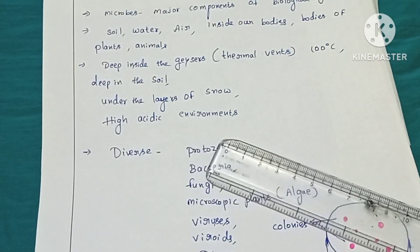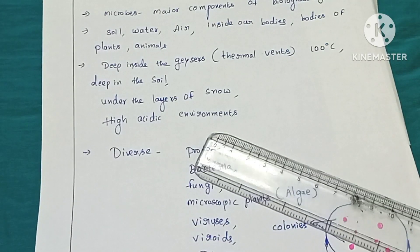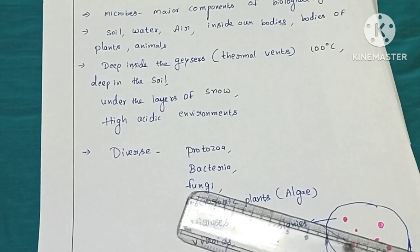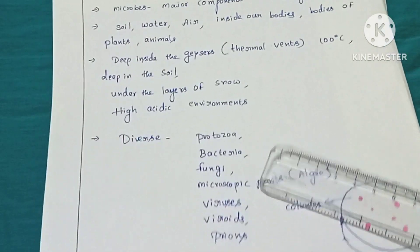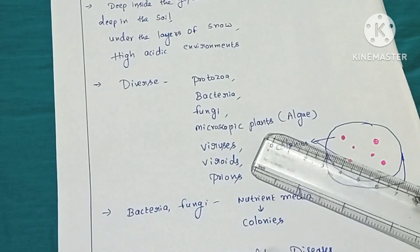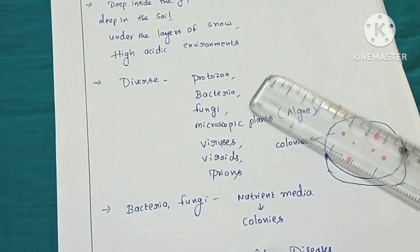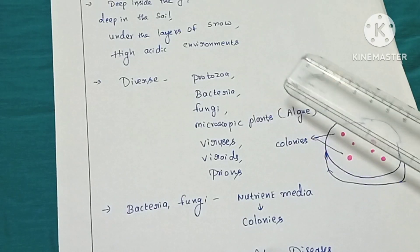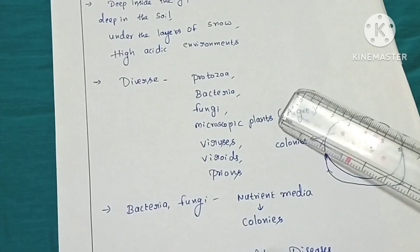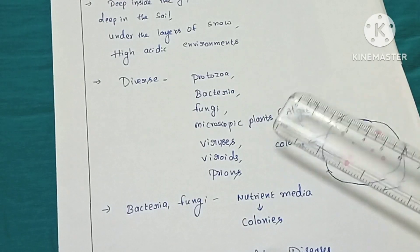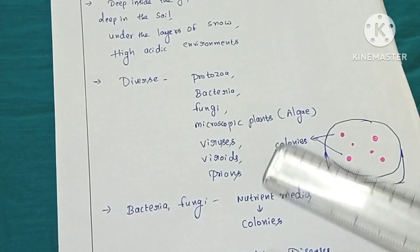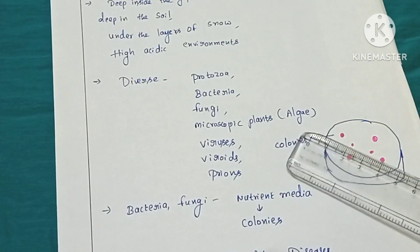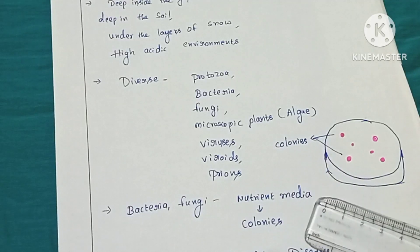These microorganisms are diverse in range. Different types of microorganisms include protozoa, bacteria, fungi, microscopic plants, viruses, viroids, and many other varieties.